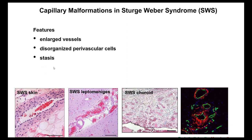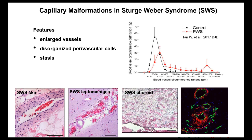Another feature is stasis — these are slow-flow lesions. In the brain, this lack of blood flow creates hypoxia and neurovascular defects in neurovascular coupling. Regarding vessel enlargement, Tan et al. measured the circumference of blood vessels in control skin versus port wine stain sections and found that all vessels are shifted to larger sizes, and there are very large vessels unique to port wine stains.